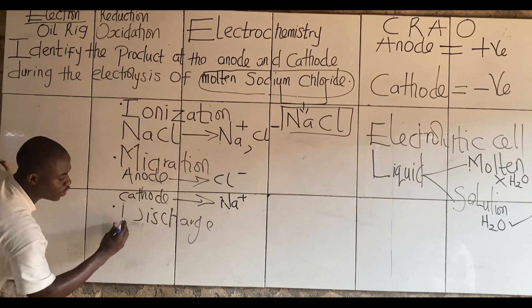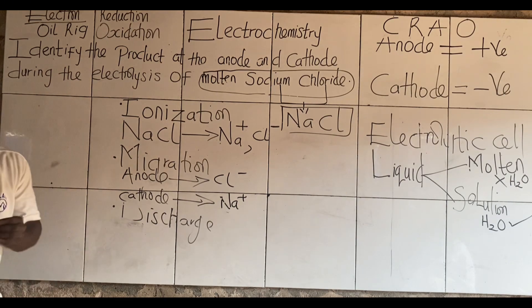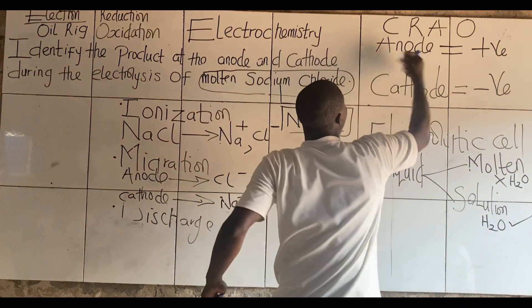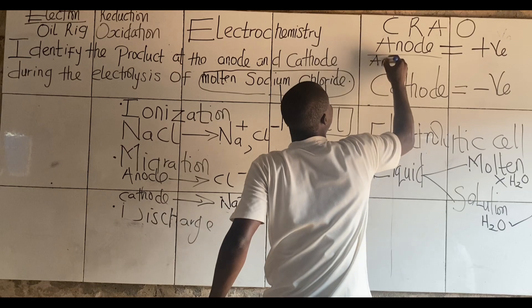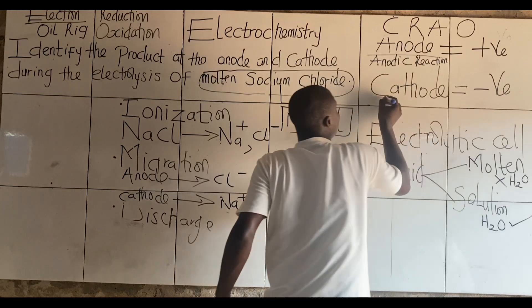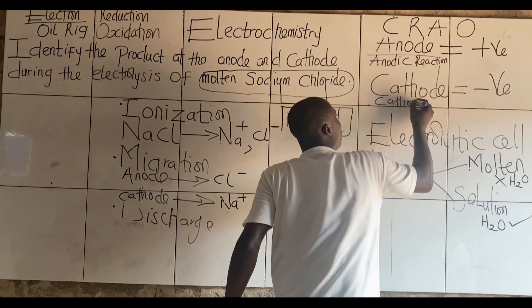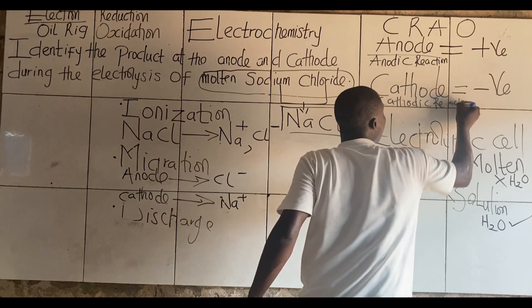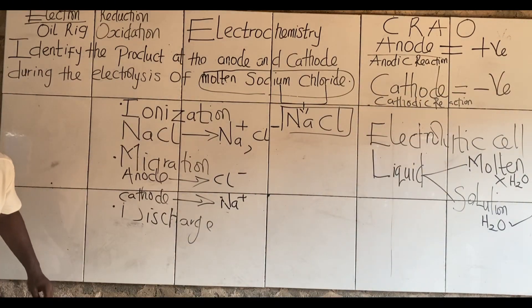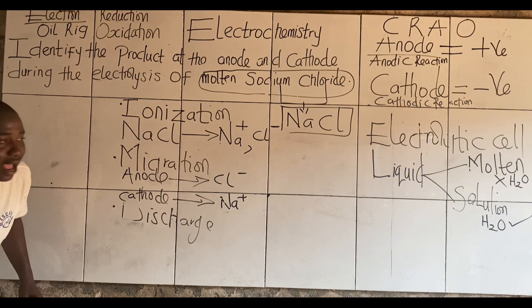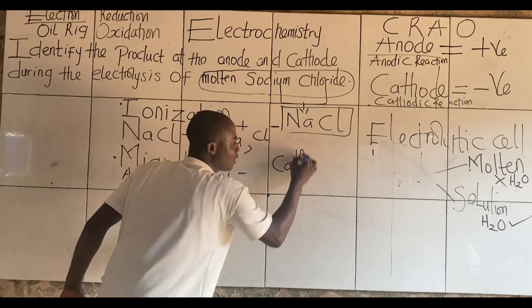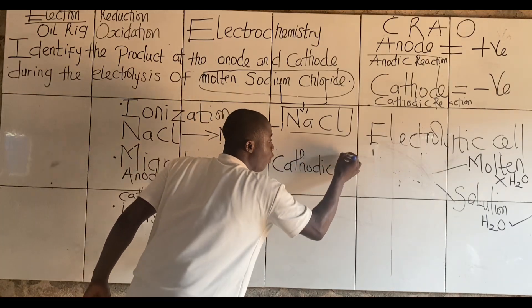The last part of this question provides two types of reactions based on our electrodes. Anode has a reaction called the anodic reaction. Cathode has a reaction called the cathodic reaction. So according to this question, they want us to provide the anodic reaction and the cathodic reaction. Let us start with the cathodic reaction.